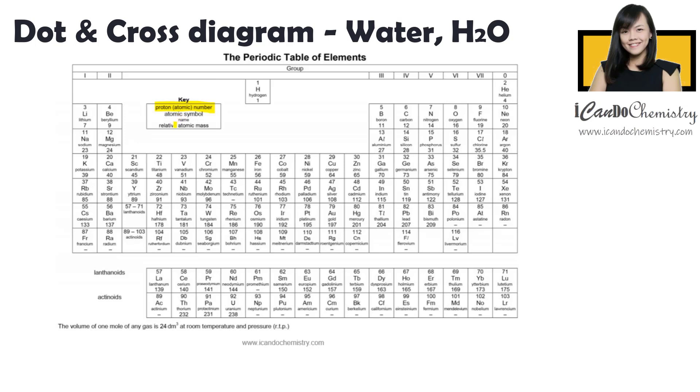Now in an atom, the number of protons and number of electrons are the same. And hence, we can safely say that the number at the top also represents the number of electrons in an atom.